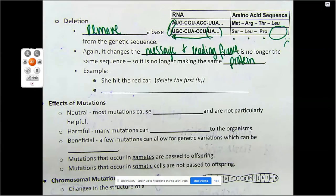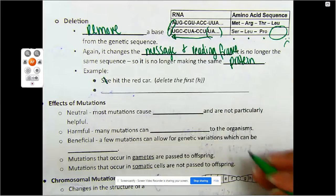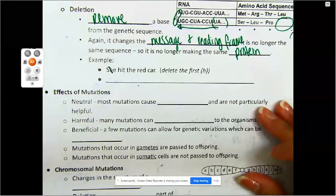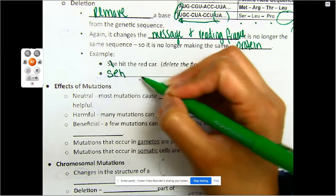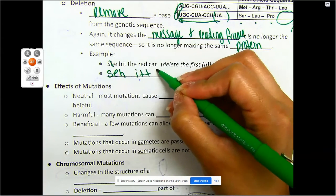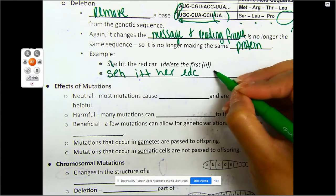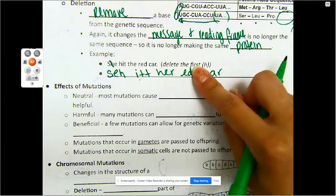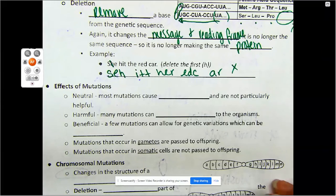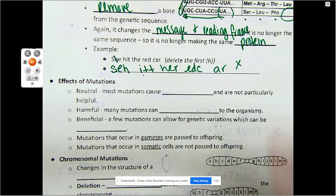Let's try it with the 'she hit the red car' sentence. I'm going to delete the first H, so it's gone. Because it's gone, we have to shift everything down. Because you read in threes, the message now reads completely differently. Does this say 'she hit the red car'? No, it does not. My message has changed — I'm not delivering the information that I need. My message is now lost in translation.